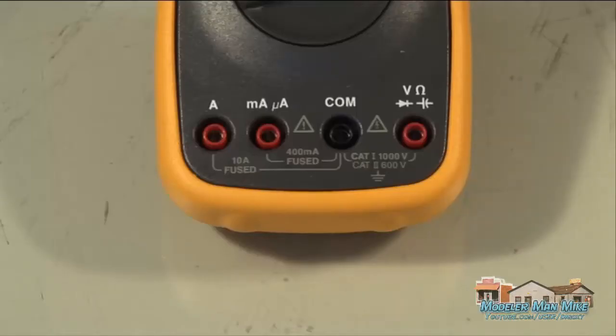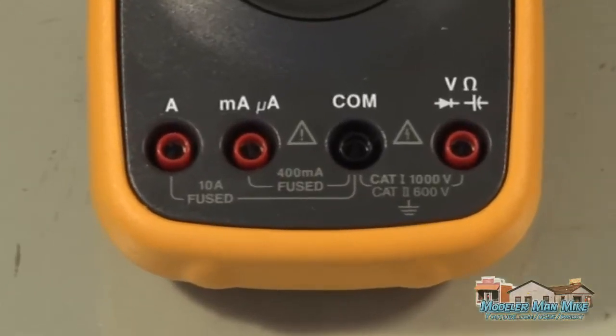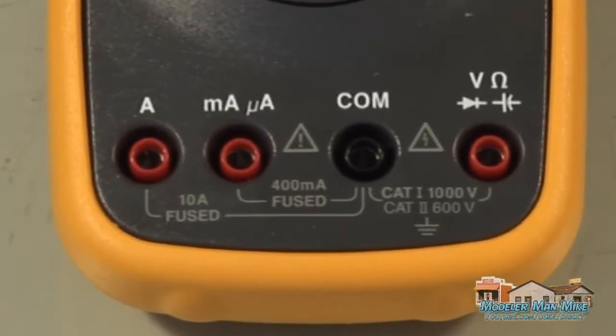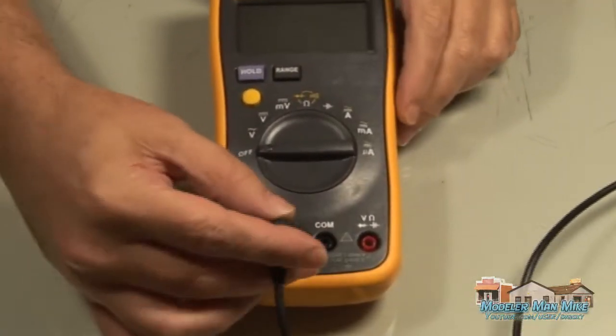The multimeter has four ports at the bottom that are used for different types of testing. You plug your leads into the corresponding jack for the test that you're working on. The common ground is always common.